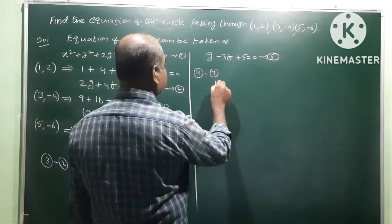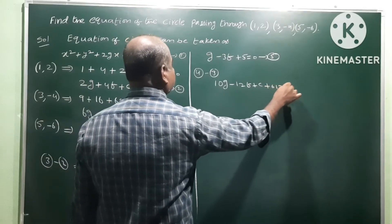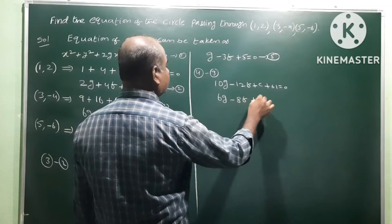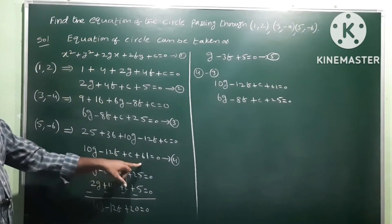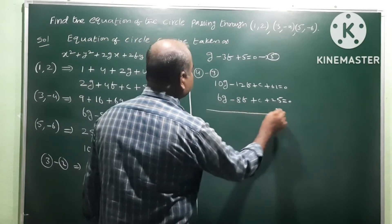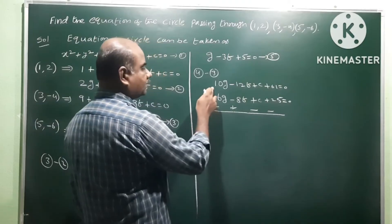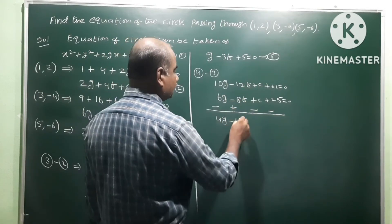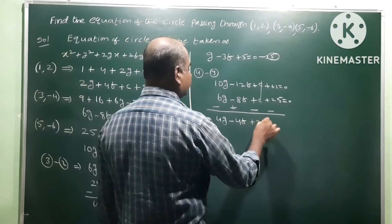Now subtract equation 3 from equation 4 to eliminate c. Equation 4: 10g - 12f + c + 61 = 0, minus equation 3: 6g - 8f + c + 25 = 0. c cancels. 10g - 6g = 4g, -12f + 8f = -4f, 61 - 25 = 36. So 4g - 4f + 36 = 0. Dividing by 4 gives equation 6.